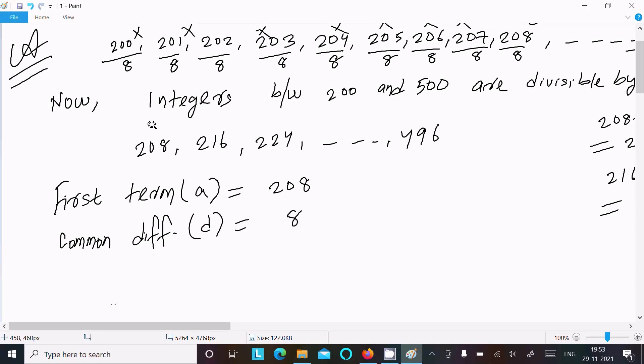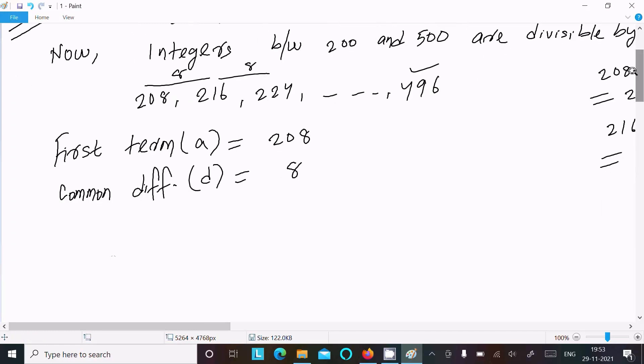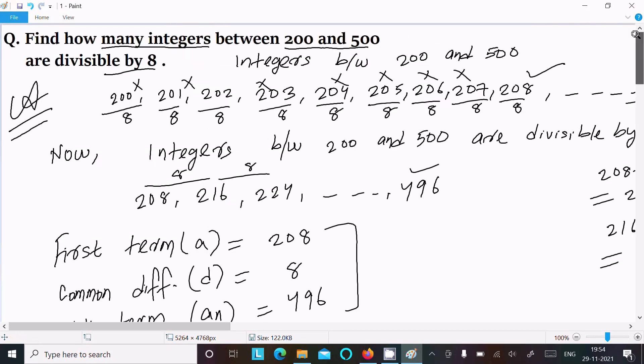Now from here we can easily identify first term. So here first term, that is equal to A, is 208. Common difference, that is equal to D, so the common difference between the two terms is 8. This two term is 8.